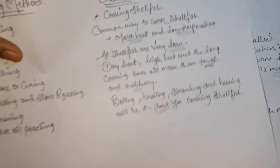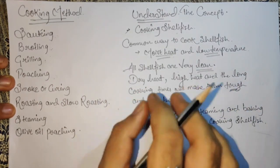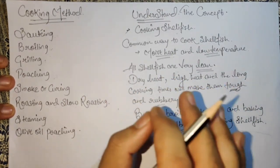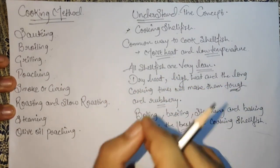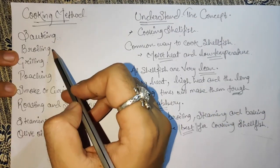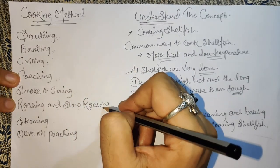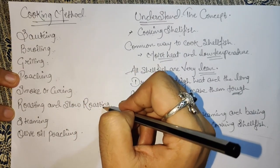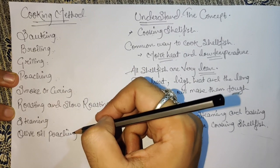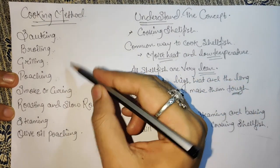Now we will study cooking techniques. Shellfish is very sensitive. The cooking method is important — you don't want them to become chewy and rubbery. Cooking methods include: sauté, broiling, grilling, poaching, smoking or curing, roasting and slow roasting, steaming, and olive oil poaching. These are some cooking methods that top chefs generally use.